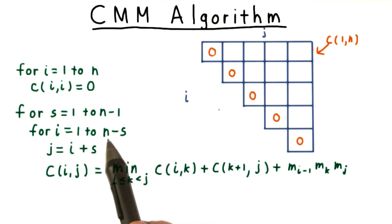from row 1, as far as it goes. For this row and diagonal, the column J will be equal to I plus S. And we compute the entry in the table as the minimum of all the possible splits of the subtree.